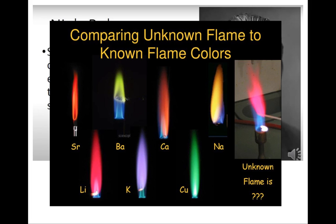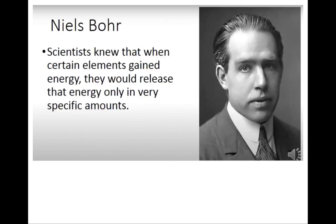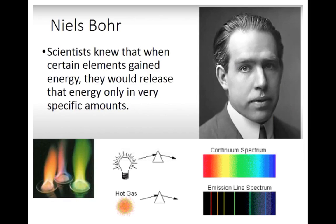If we take this one step further, we can take that flame color and subject it to a prism or diffraction gradient or what's known as a spectroscope. When we look at that flame color through a prism we would notice that it would either yield a continuous spectrum if it was white light